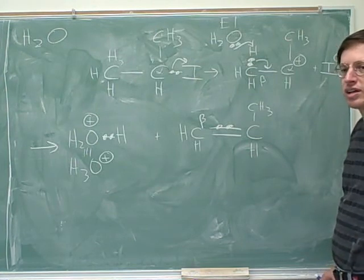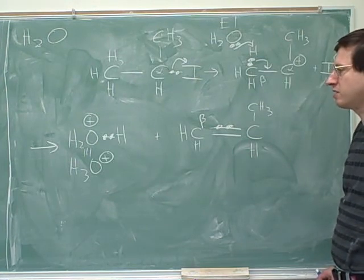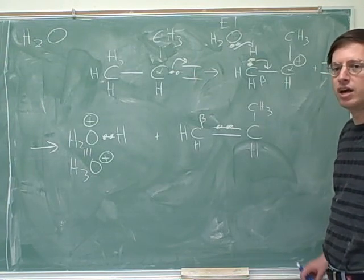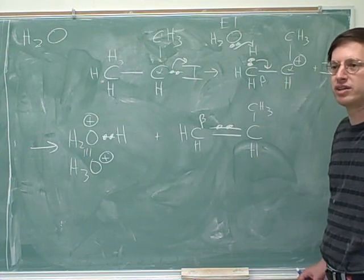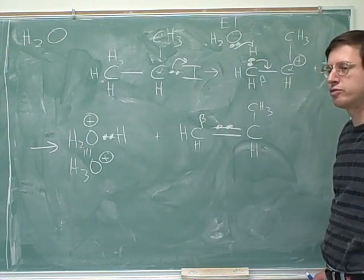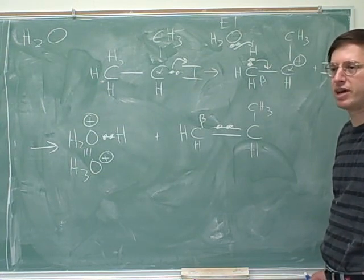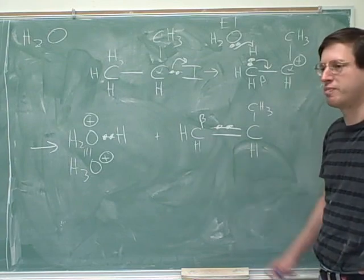And that gives us our products here. So you can see that what happened here is precisely what would have happened in E2. It just happened in two steps. So first, the leaving group left, and then the base stole the proton. Whereas in an E2, the leaving group would leave simultaneously with the base stealing the proton from the beta carbon.